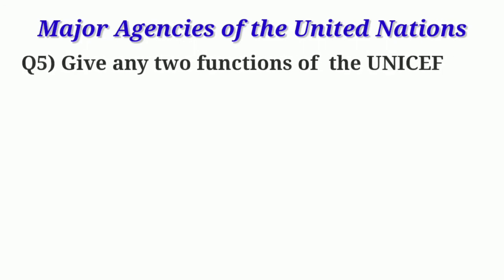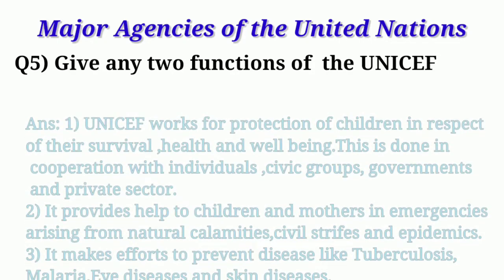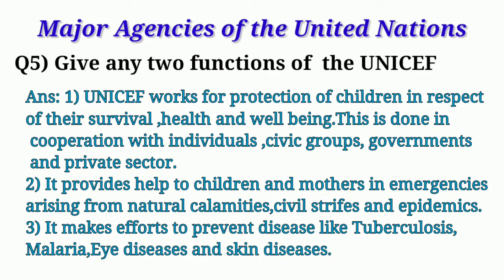Two preventable diseases against which UNICEF runs programs are diarrhea and iodine deficiency. Question 5: Give any two functions of UNICEF. Instead of two we will do three. First, UNICEF works for the protection of children in respect of their survival, health, and well-being, done in cooperation with individuals, civic groups, governments, and private sector. Second, it provides help to children and mothers in emergencies arising from natural calamities, civil strife, and epidemics.